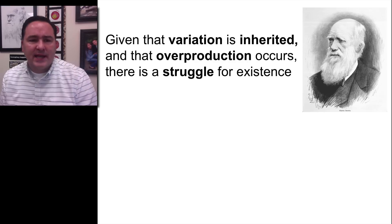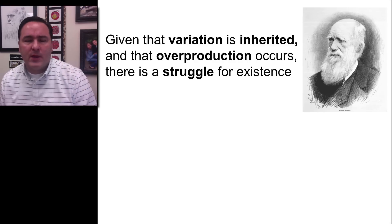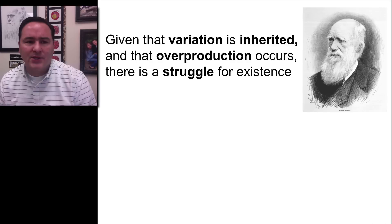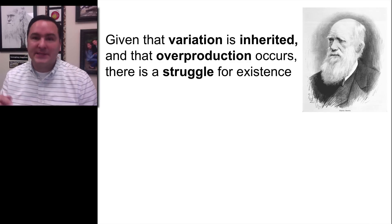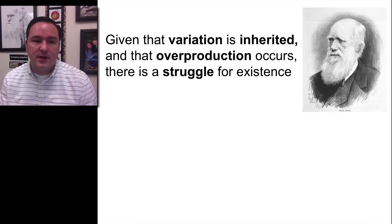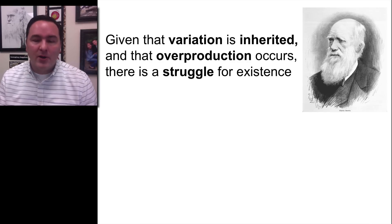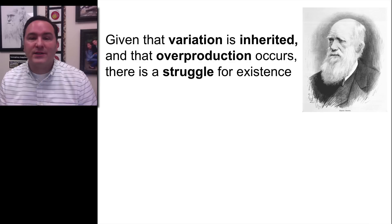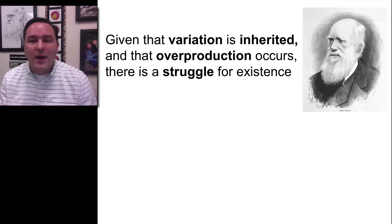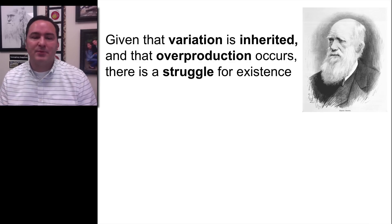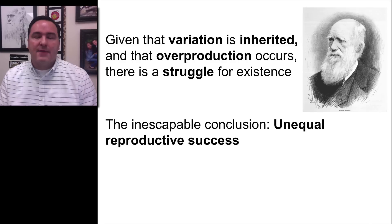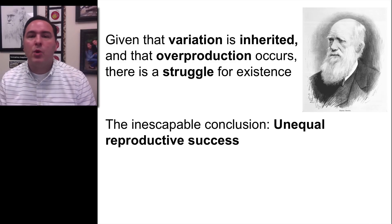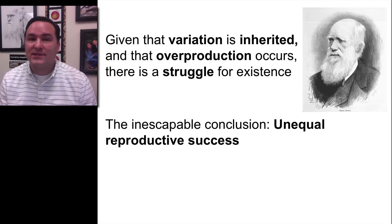So, natural selection — we can say that based on these postulates, given that variation is inherited and that overproduction occurs, there then is this struggle for existence, and this is the way that Darwin couched his argument in his book. The inescapable conclusion then is an unequal reproductive success.